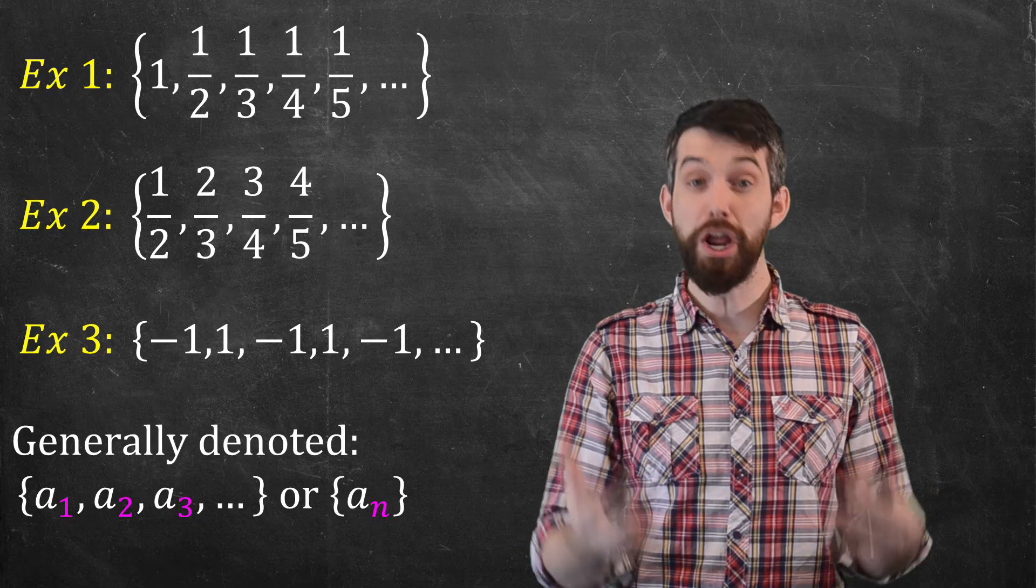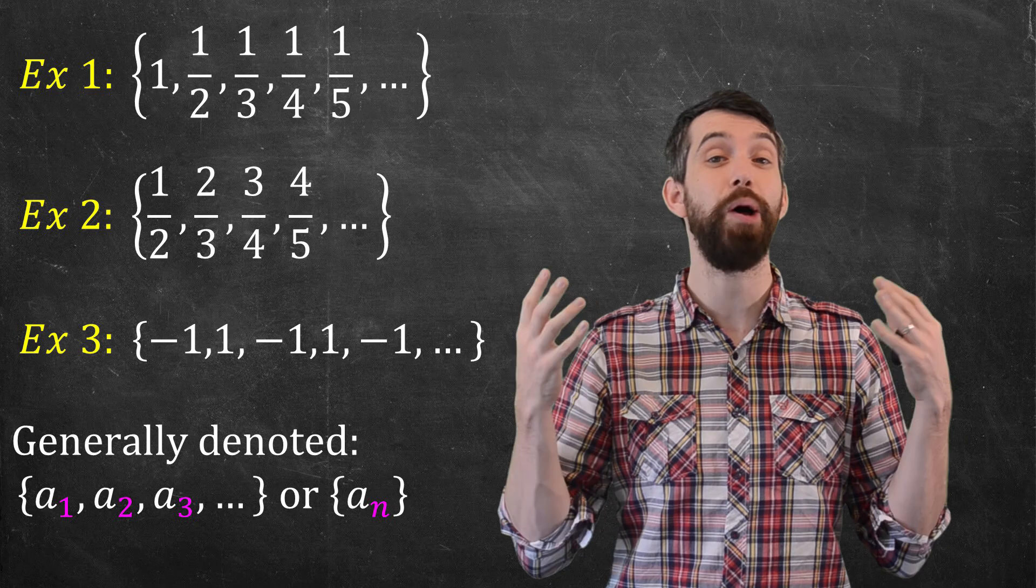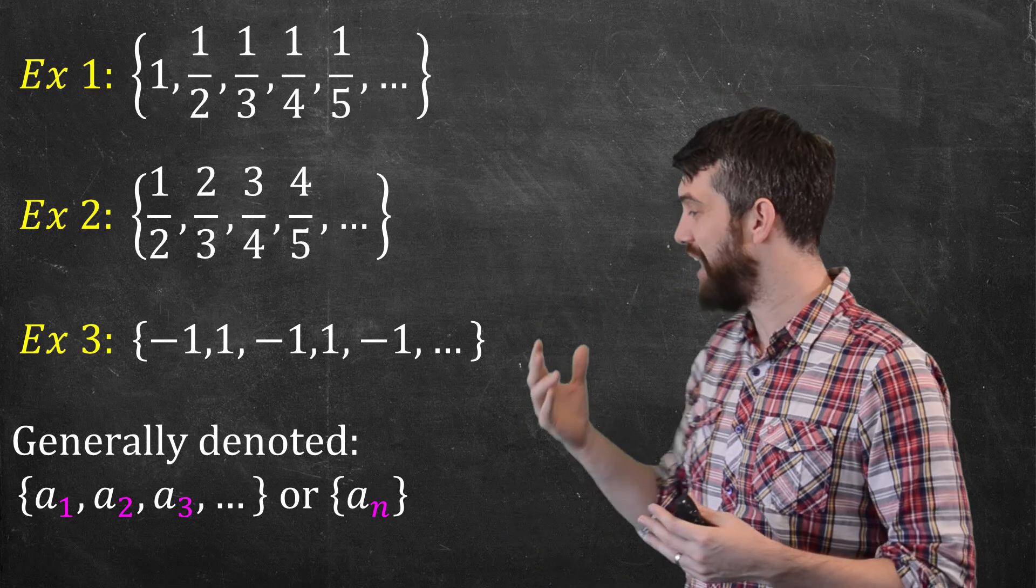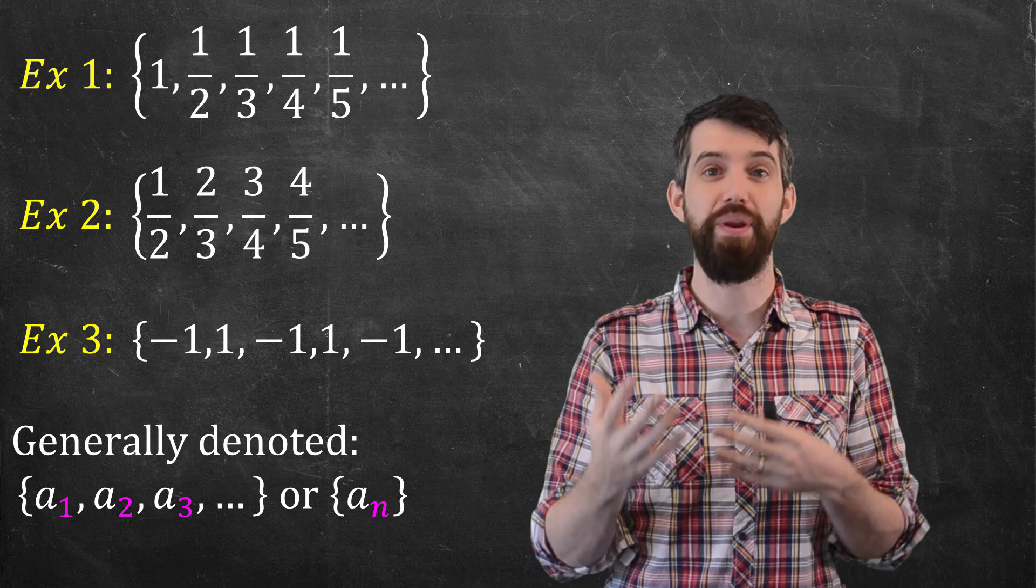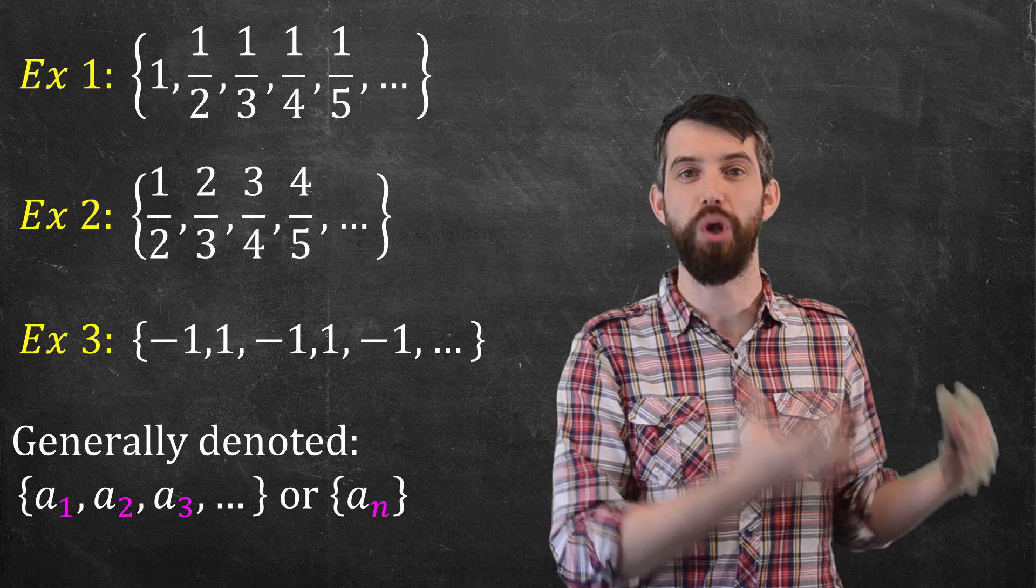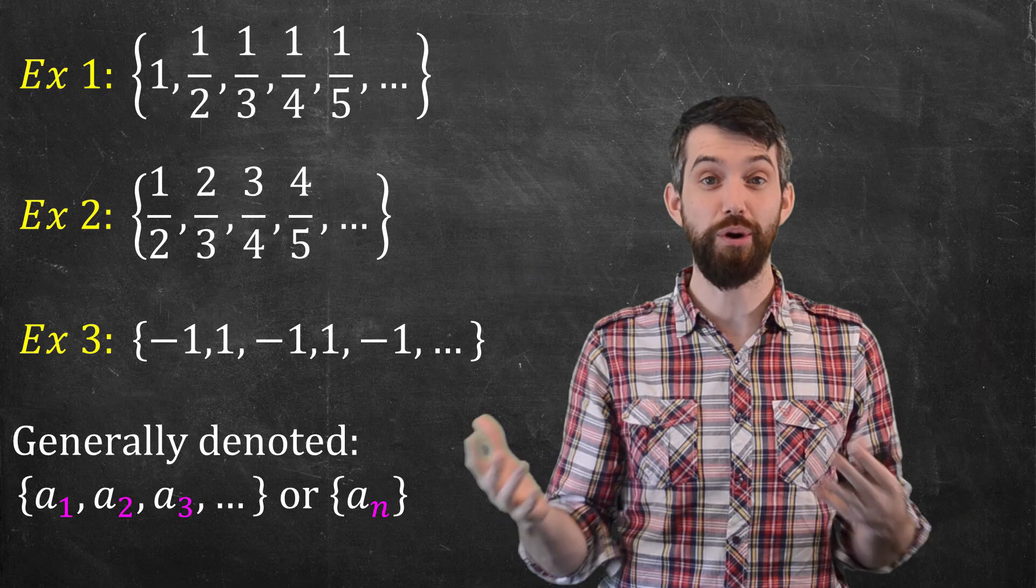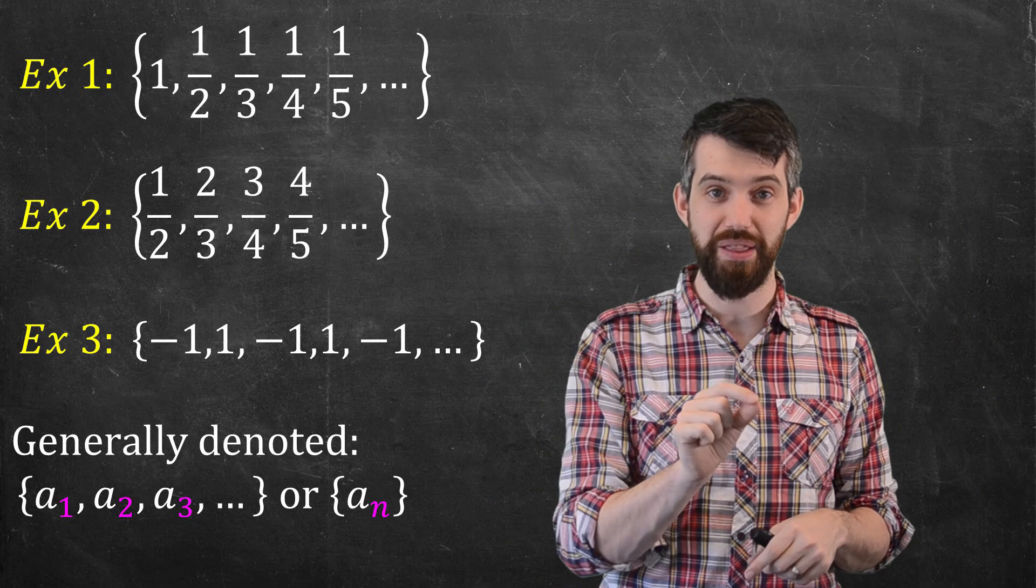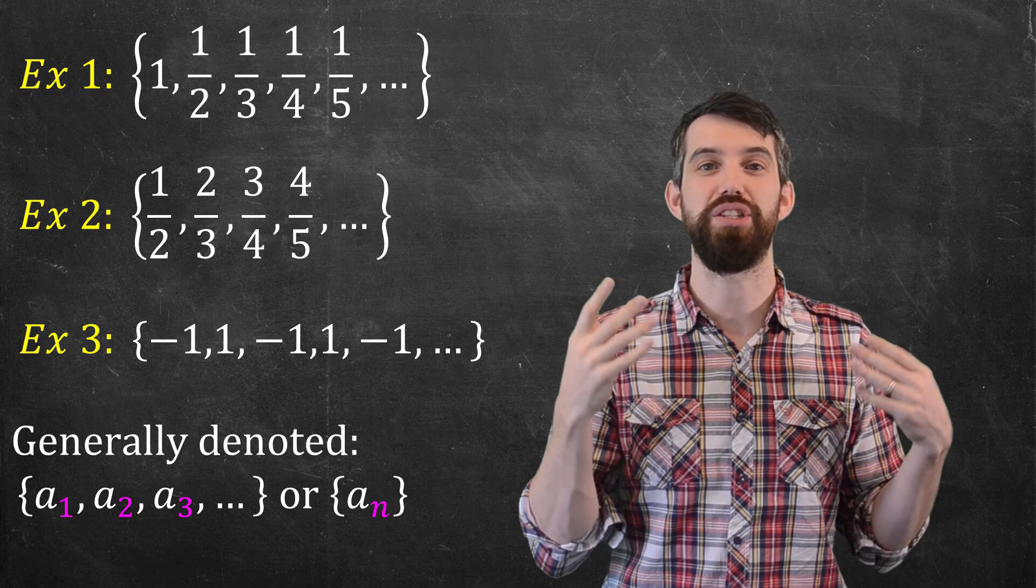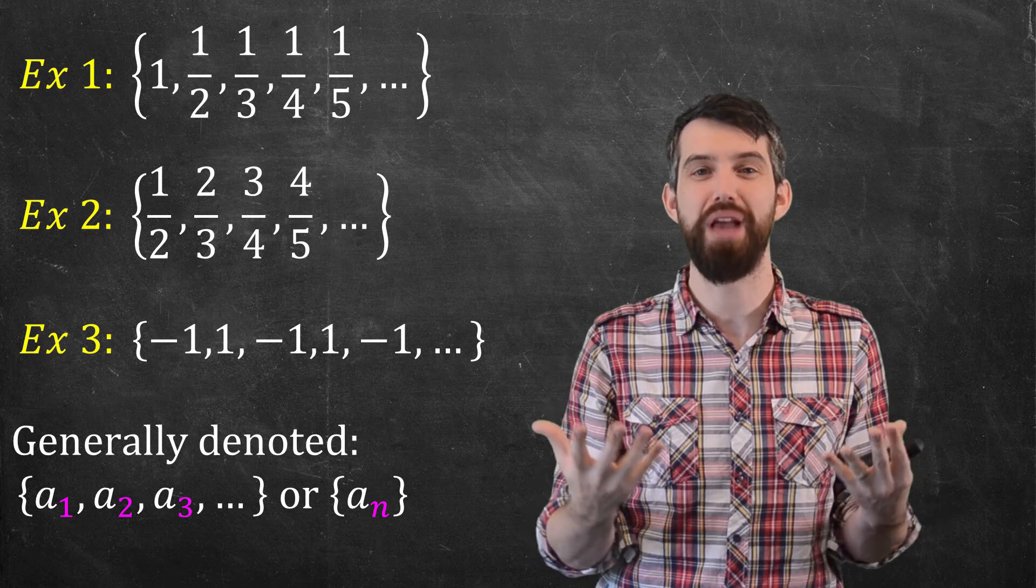And then my general notation is to use a sub i notation. So I could have a listing of different elements: the first element we call a_1, the second element a_2, the third element a_3, and so on. And then the completely general way to talk about this is to do braces with a_n in the center, where n is thought of as just some natural number, and that's my shorthand for the entire sequence.